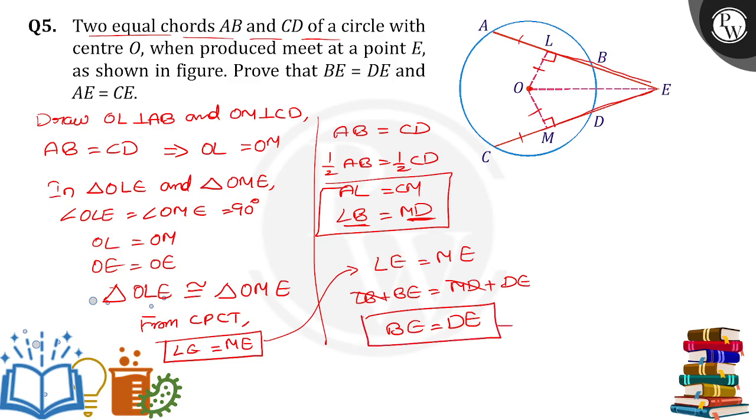Take it as the first one is complete. Next one, what we need to prove here? Since LE is equal to ME, and AL is equal to CM, AL is equal to CM. So take it as equation 2 and take it as equation 3. Add both equation 2 and 3.